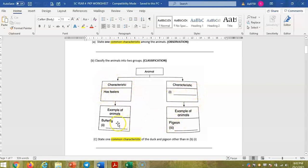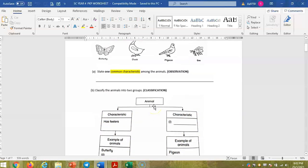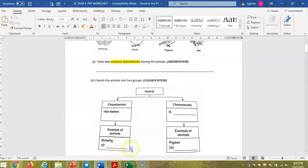Then you can classify the animals. Okay, the first characteristic is given here - has feelers. So one of the animals here has feelers, one is butterfly. So you can find the second animal. And for this one, you are given the pigeon, the example. So you need to find the characteristic.